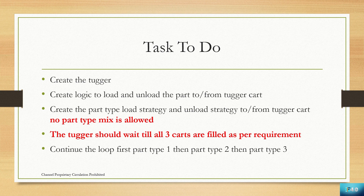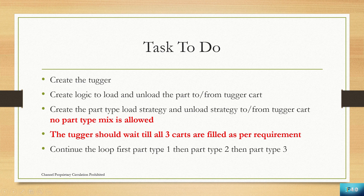We will create the part types loading strategy and unloading strategy to and from the Tugger cards such that no part type mix is allowed. The Tugger should wait until all three parts are filled as per requirement. For example, if I am transferring part type 1 (blue) but only have two in the buffer, the Tugger waits until a third blue part arrives in QA, then starts and transfers the parts to Q1. We continue this loop: part type 1, then part type 2, then part type 3.